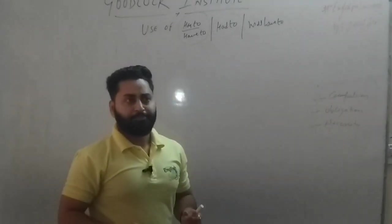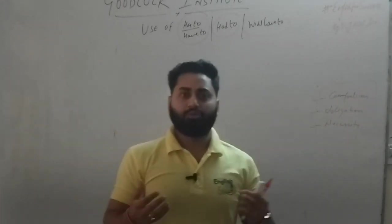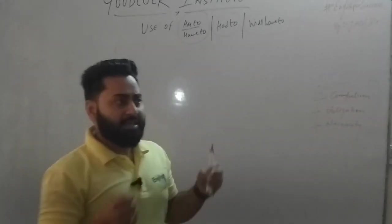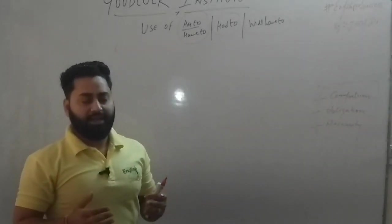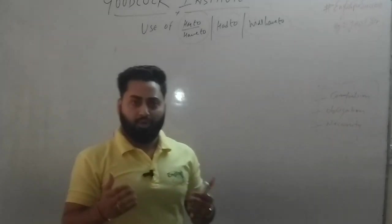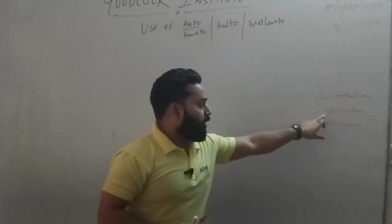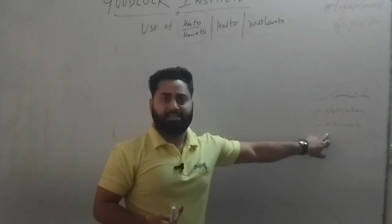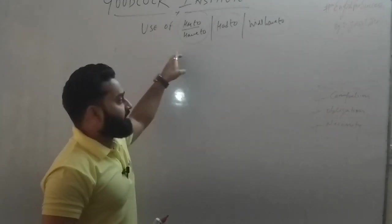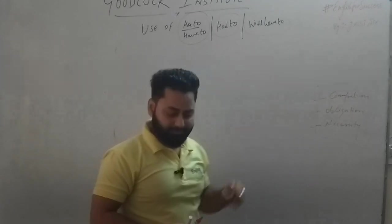The third use is necessity. In these sentences, you get to see these three things. For example: I have to go, I have to do this work, I have to do this work in the morning, I have to do this exam — sentences where you really don't want to do that work, but you have to do it out of compulsion, obligation, or necessity. Use has to and have to in present, had to in past, and will have to in future.